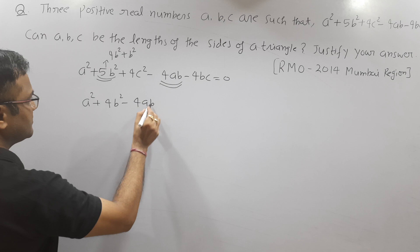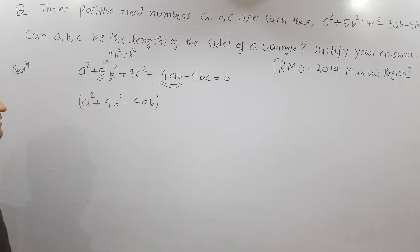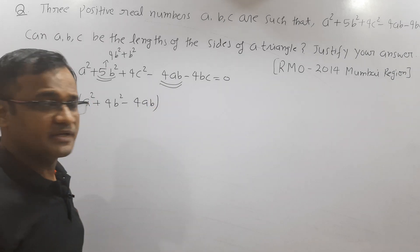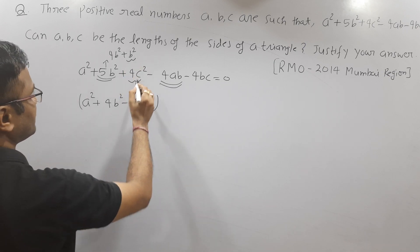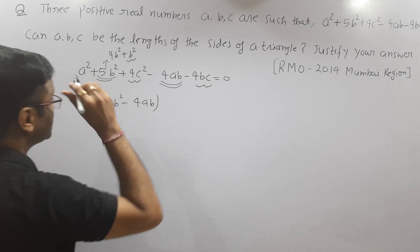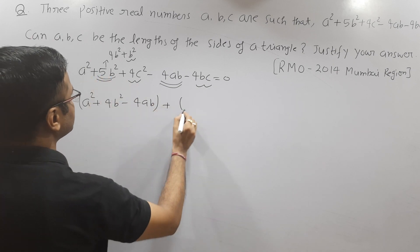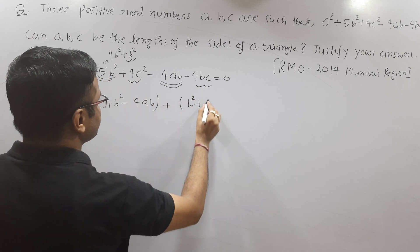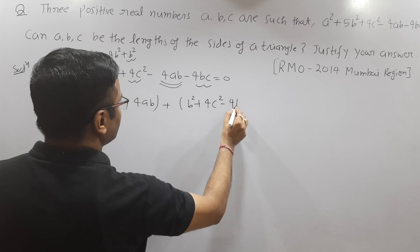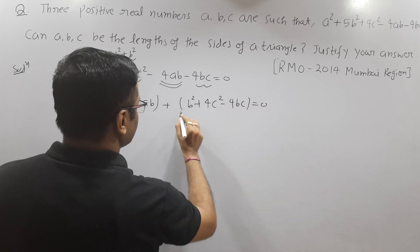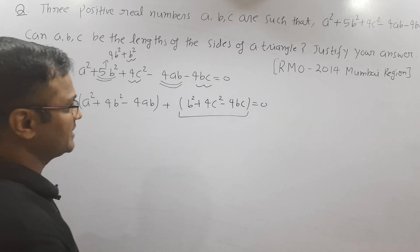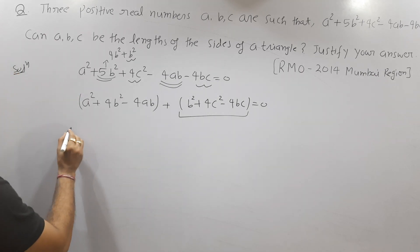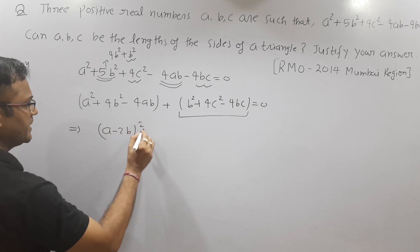Now look at the remaining terms: b², 4c², and -4bc. Write all the remaining terms in the next bracket. Look at the beauty of this expression - this also becomes the perfect square of (b - 2c). So from here I can write this becomes (a - 2b)² + (b - 2c)² = 0.